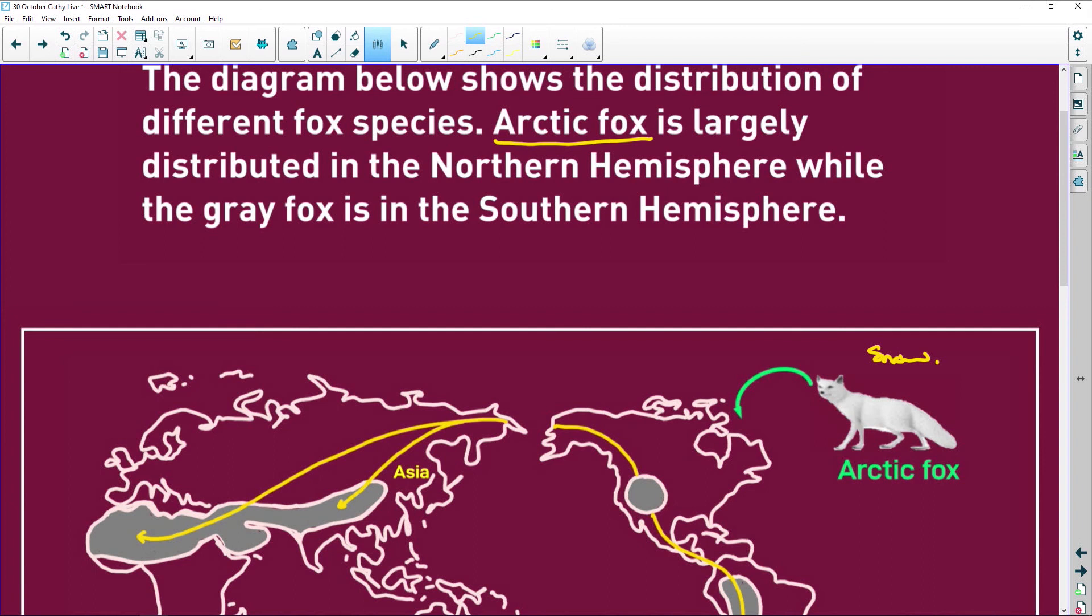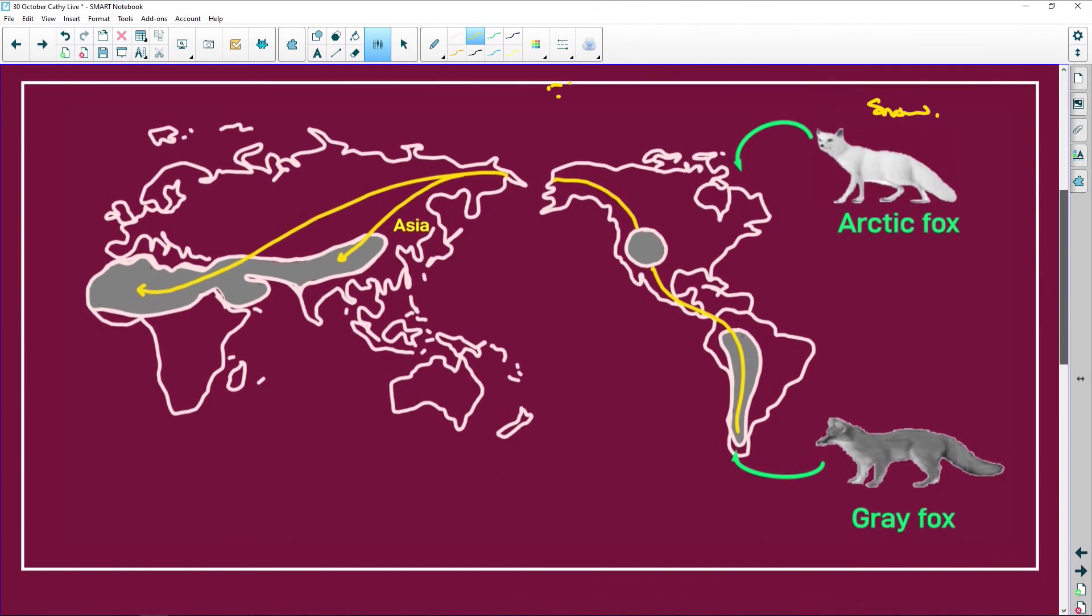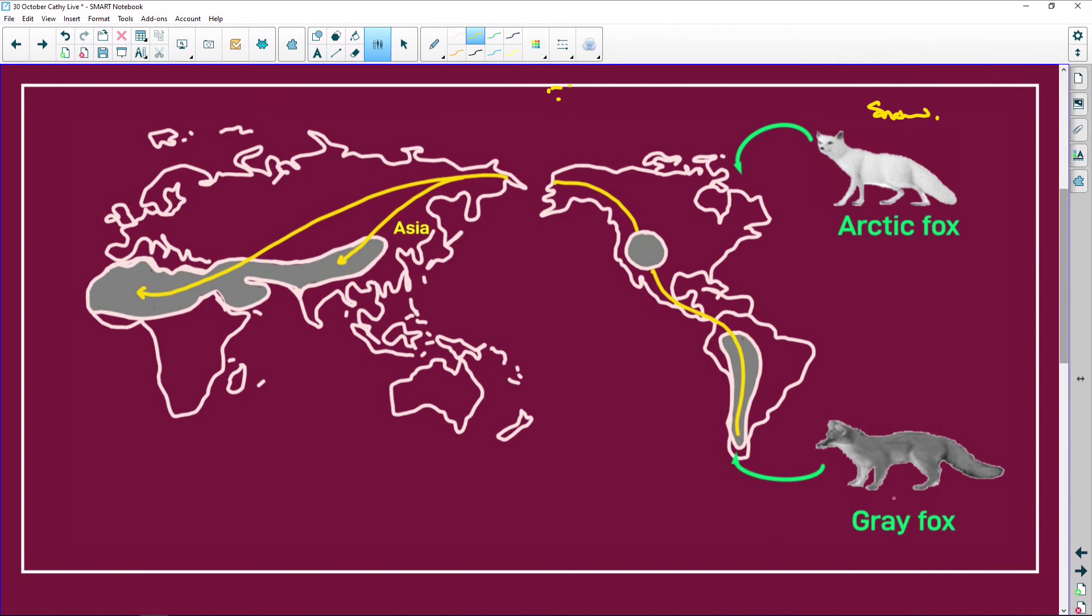It can't be seen. Then it's largely distributed in the Northern Hemisphere near the arctic, because the arctic is up here, and then the gray fox is in the Southern Hemisphere. So the gray fox is down here. You can see that they started off here and then they went to Asia and then they went here, but what do we find? Mainly arctic foxes over here.